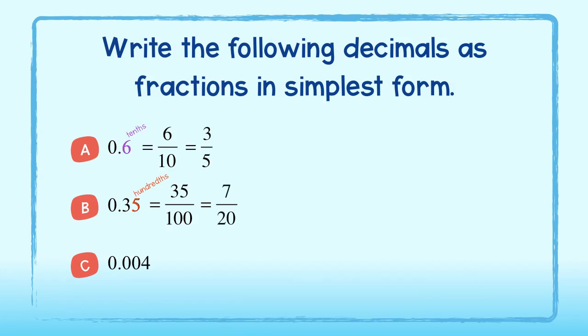Lastly, we can write four thousandths as a fraction as well. To simplify, we write it as one two hundred and fiftieth. Good!